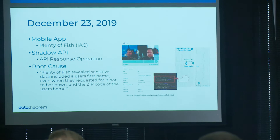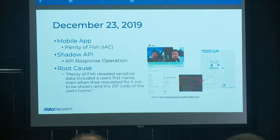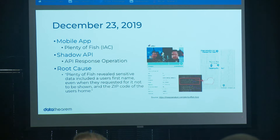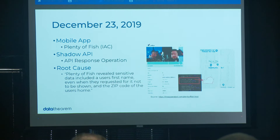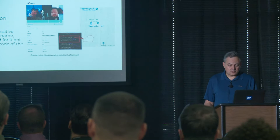Two months later, another app — this time a dating app, Plenty of Fish. Dating app data is obviously sensitive: your preferences, or maybe you don't even want to be associated with a dating app. In that case, the API response included far more information about the user than was necessary. The app itself did the filtering and wouldn't show it all — but the hacking group wasn't using the mobile client, they were calling the API directly. So all preferences, pictures, etc. were exposed.